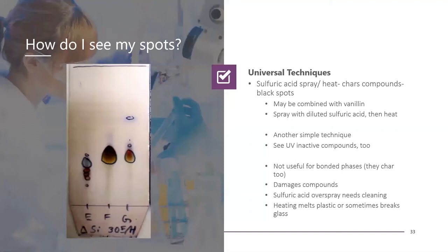Sulfuric acid charring only works on silica and alumina because bonded phases such as reverse phase and diol will also char, turning the entire plate black. The heat used to see the spot melts plastic-based TLC plates. However, Teledyne ISCO TLC plates have a glass backing so they are fine, and TLC plates with aluminum backing are also useful for this technique. This technique is compatible with F-254 plates.